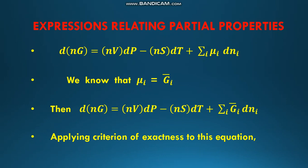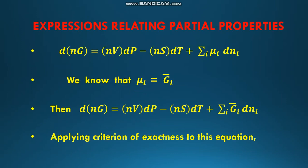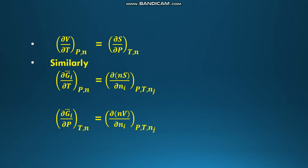Applying the criteria of exactness to this equation, we can write: (∂V/∂T) at constant P, n = (∂S/∂P) at constant T, n. Similarly, (∂Z_i bar/∂T) at constant P and composition equals (∂(nS)/∂n_i) at constant P, T, and n_j. Similarly, (∂Z_i bar/∂P) at constant T, n equals (∂(nV)/∂n_i) at constant P, T, and n_j.